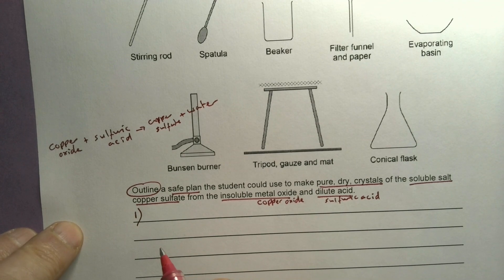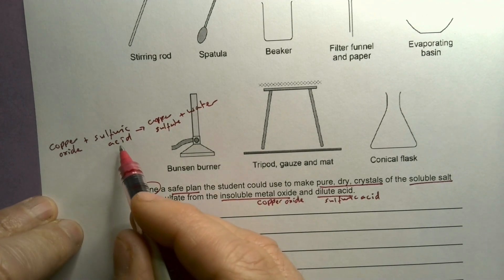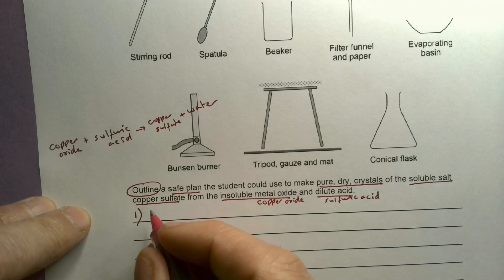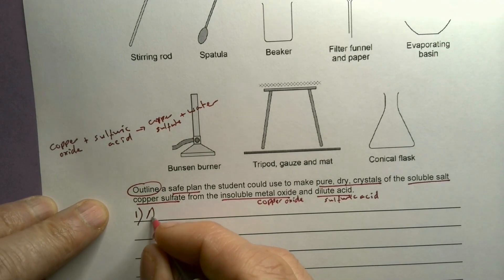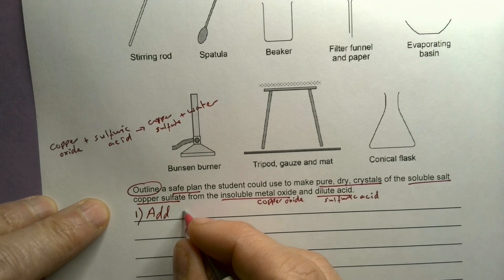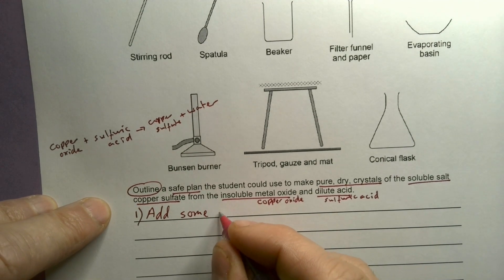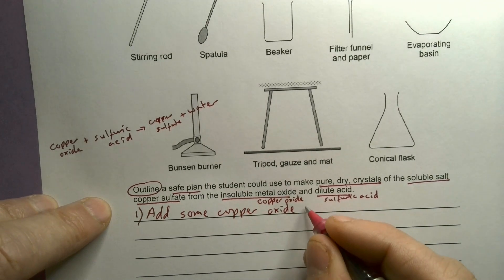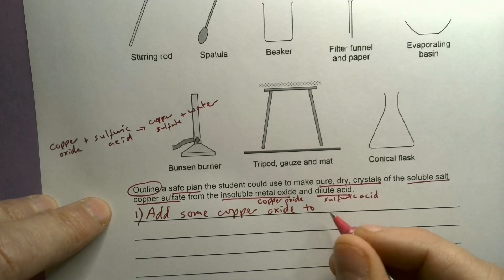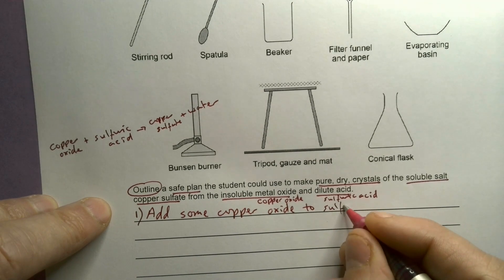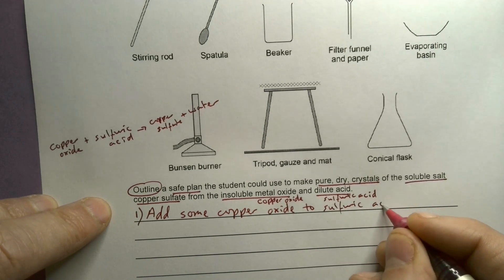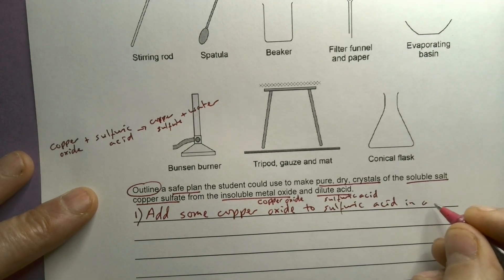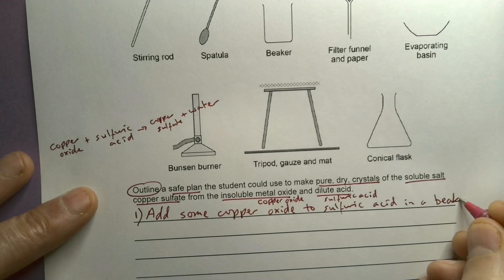So the first thing I'm going to do is I'm going to add copper oxide to sulphuric acid. I'm going to make sure I add loads, yeah, loads of it. So add some copper oxide to sulphuric acid. And I'm going to make sure I mention the equipment in a beaker.